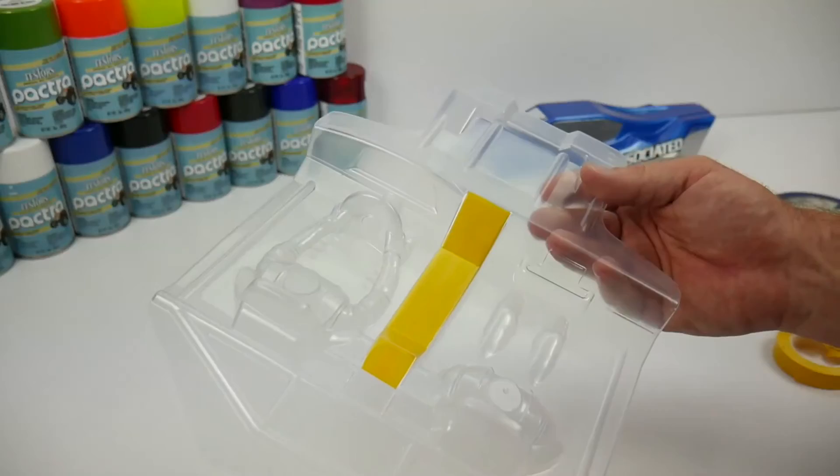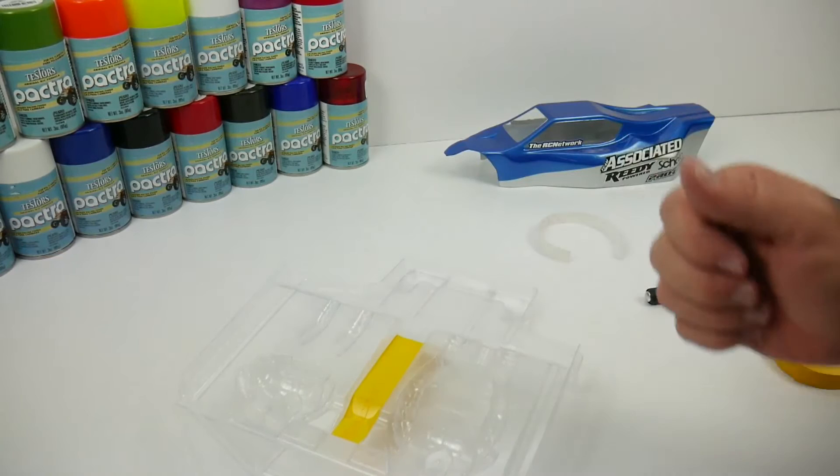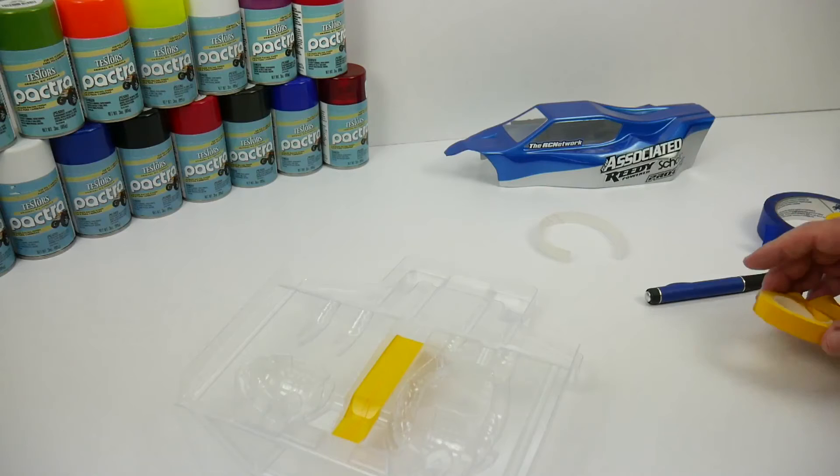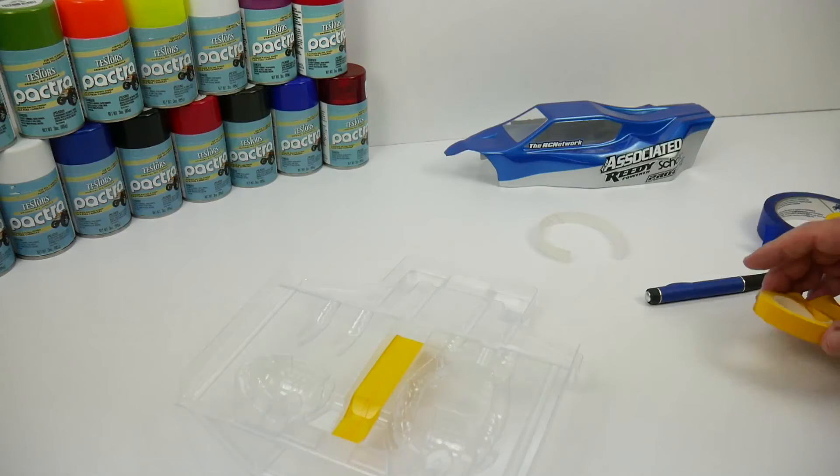Well guys, that's it. That's how I prep my bodies. Getting it ready for some good Pactra paint. Well, hopefully you guys have enjoyed this video. I showed you how to pre-cut bodies, how to wash them up so they're all nice and clean, ready for the Pactra paint. Also, some of the different tapes that I use here at the RC Network. Well guys, that's it for now. If you have any comments or questions about this video, please feel free to post it on down below. And as always, thumbs up and subscribe. That's it for now guys. Over and out.